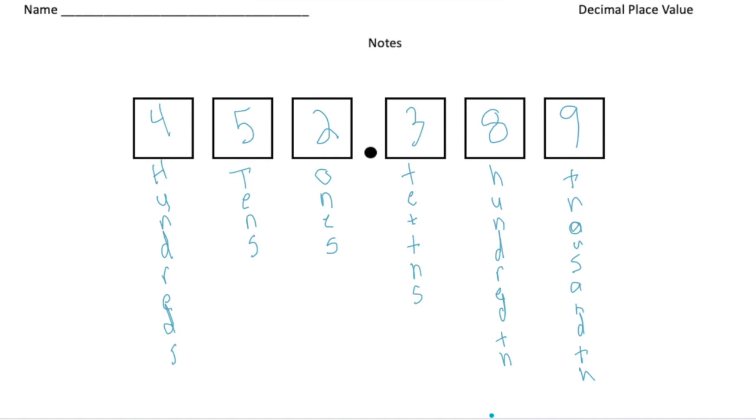All right, so the proper way of saying this number would be 452 and 389 thousandths. So why don't you pause the video and try the your turn now problem. And when you're done, hit play. You can see how you did. Good luck.